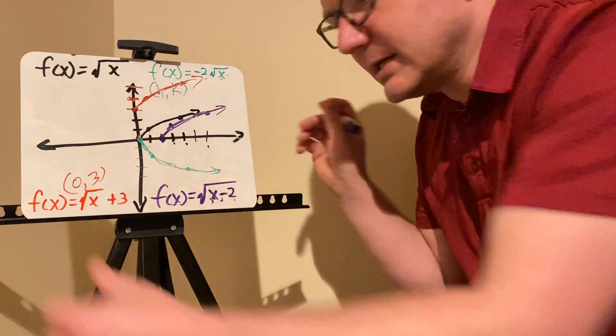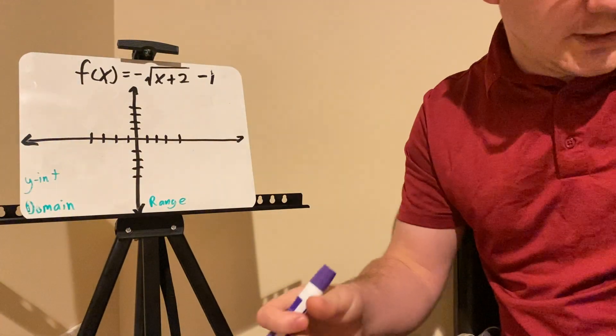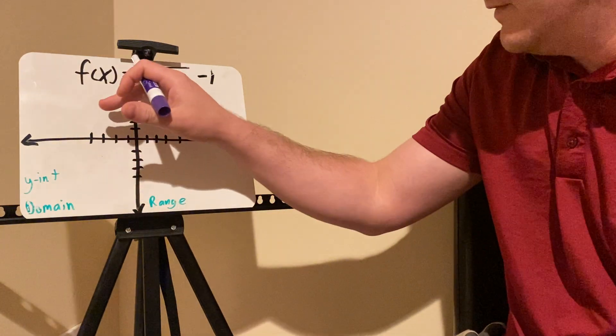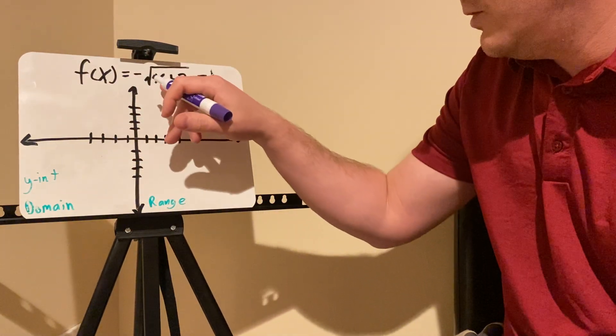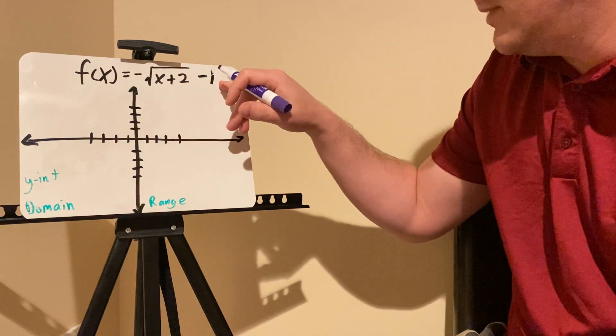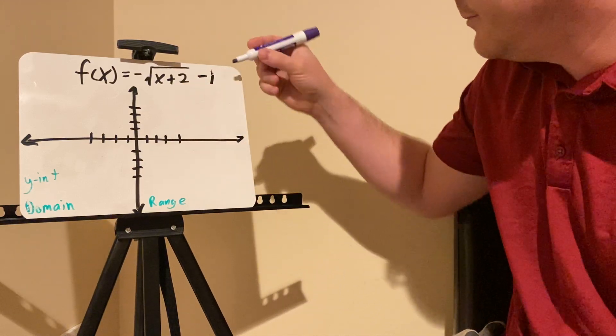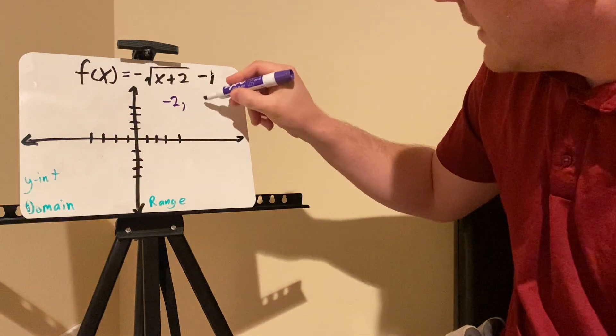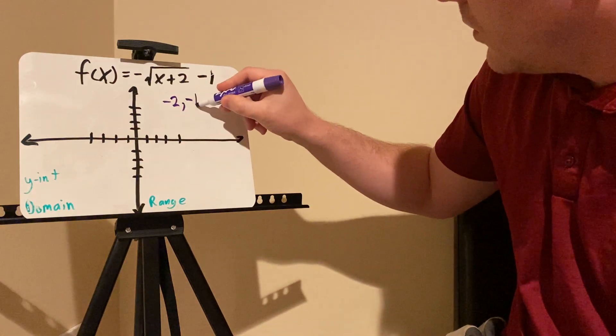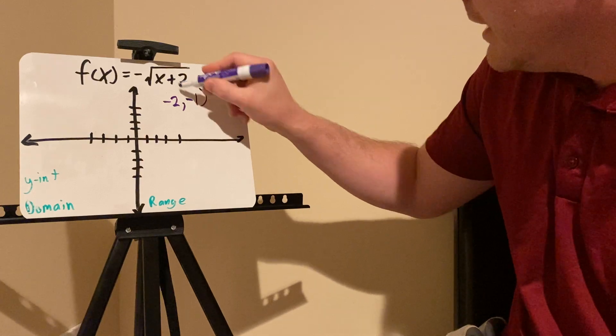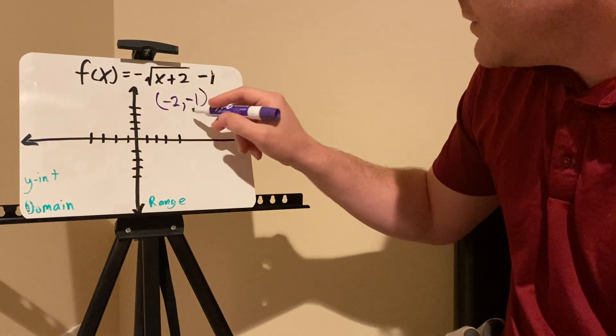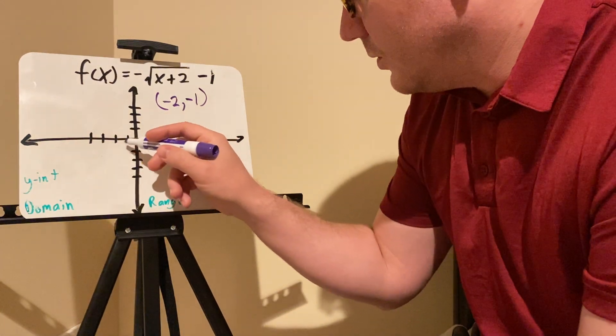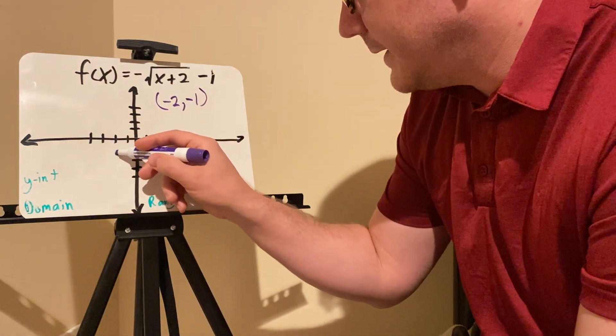So let's take a harder one and sort of look at that. Here's one that involves all of them. I have just a negative 1 for my A value. I got a plus 2 here and a minus 1. So my H value is going to be negative 2. And my K value is actually going to be negative 1, because it's usually plus K and minus H. So negative 2, negative 1 is going to be my initial value. And so I go negative 2, negative 1, and I can plot that there.